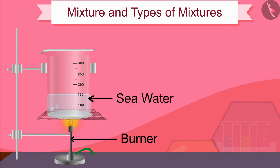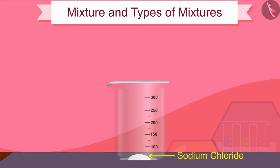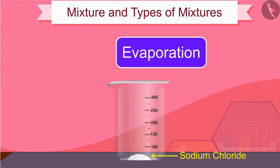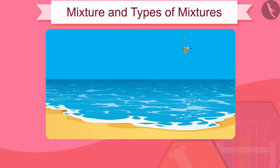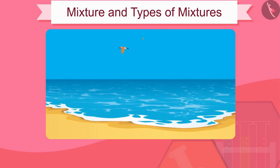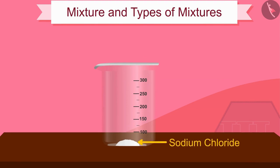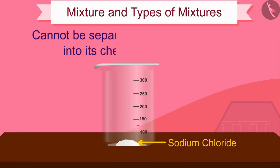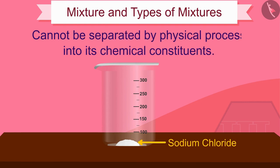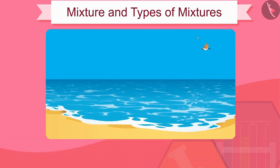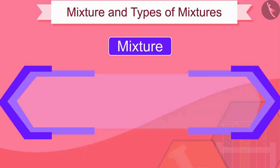Absolutely right — sodium chloride dissolved in seawater is separated from water due to evaporation. Therefore we can say that seawater consists of sodium chloride and water. However, sodium chloride is itself a substance and cannot be separated by a physical process into its chemical constituents.